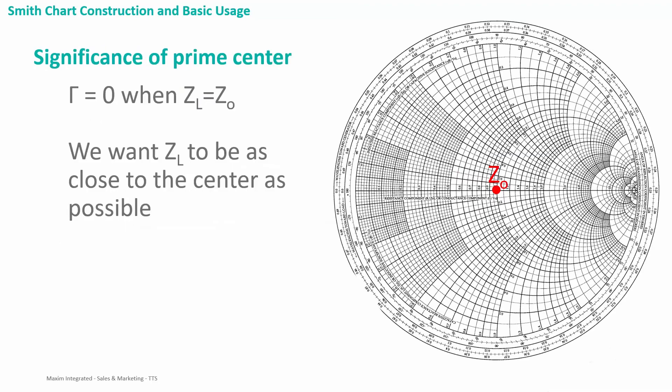If you think back to our equations, we said that there is no reflection when the load impedance is equal to the source impedance. We will use the Smith chart to plot the load impedance. And since we have used normalization to have our source impedance sit at the prime center of the Smith chart, this means we will want our load impedance to be as close to the center as possible in order to make ZL and ZO equal to each other.